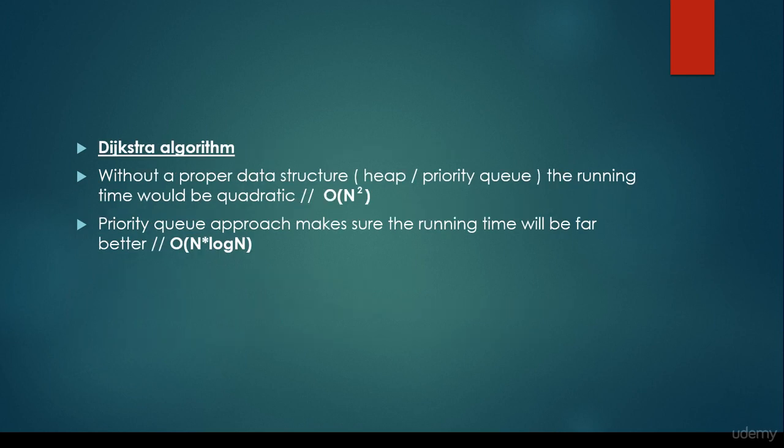Let's consider two important examples. First, Dijkstra's shortest path algorithm. Without a proper data structure like a heap or priority queue, the running time would be quadratic, O(n²). When we want to find the shortest path in a graph where the number of edges equals n, the time complexity is O(n²). The priority queue approach makes sure the running time will be far better, O(n log n). With a huge dataset where n is a large number, it's very important to use an O(n log n) algorithm instead of O(n²).